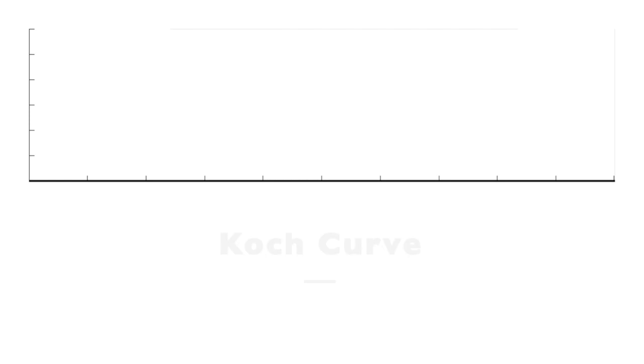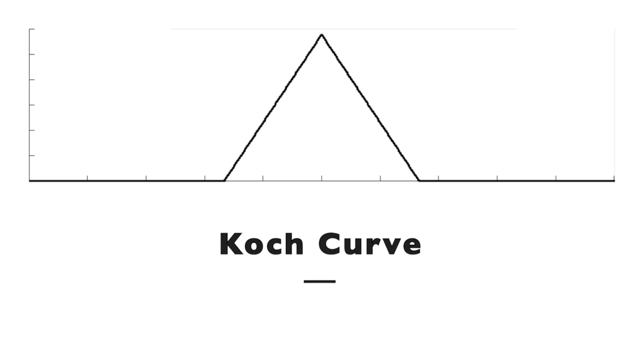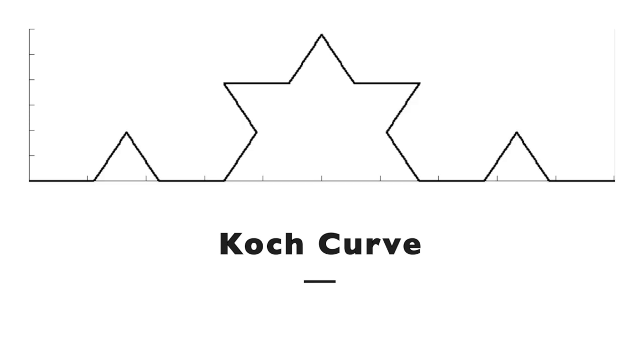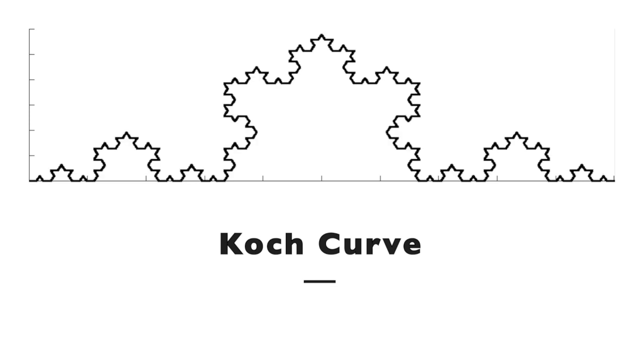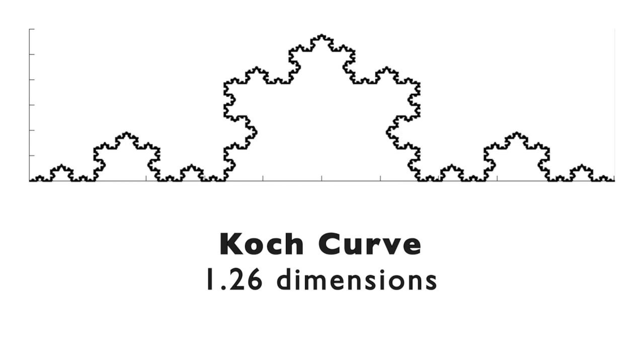If we connect three of these fractals together to create an object that looks like it's enclosing some space, it turns out to have zero volume but infinite area. To demonstrate, let's look at a very simple kind of fractal called a Koch curve. It starts with a line segment that we divide into three equal parts. We remove the middle third and replace it with two angled pieces of the same size as the piece we just removed. We repeat this process on each of the four line segments that are left, and then repeat it again on each of the 16 line segments that result. Repeating this process indefinitely results in a Koch curve that has 1.26 dimensions.